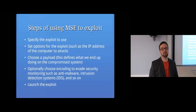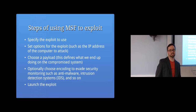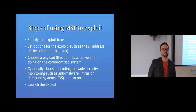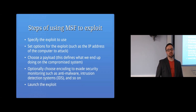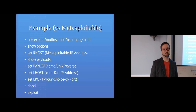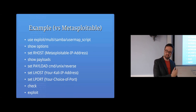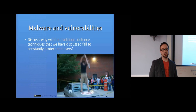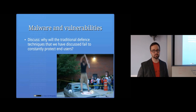When using Metasploit you specify which exploit to use, set options for it, choose a payload, optionally choose encoding methods, then launch the exploit — and as a result you gain access to the target machine.